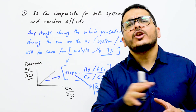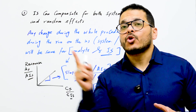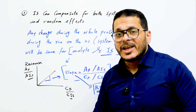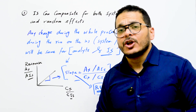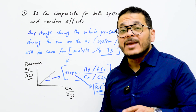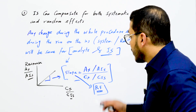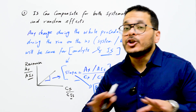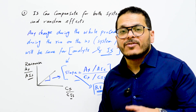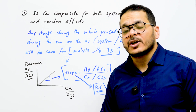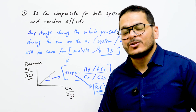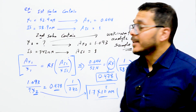This response factor will not change because any effect — whether systematic from matrix effect or random from instrument fluctuation or any other effect during the run — that happens to the internal standard will be the same for the analyte. So the response factor remains constant throughout the whole run, and this response factor will be used to quantify the concentration of the unknown target analyte.